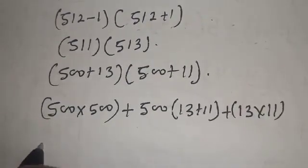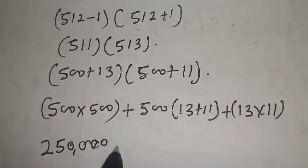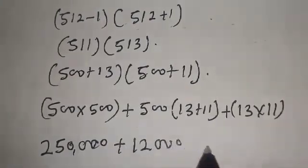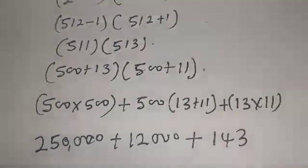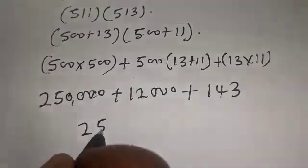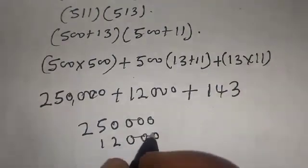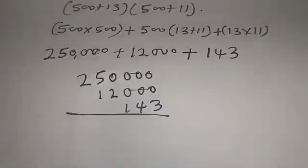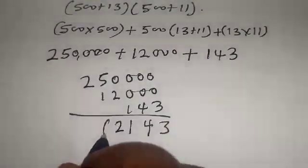Now 500 times 500 is 250,000. Plus, if you open this bracket, we have 12,000 plus 143. Let's add everything together. This is 262,143.